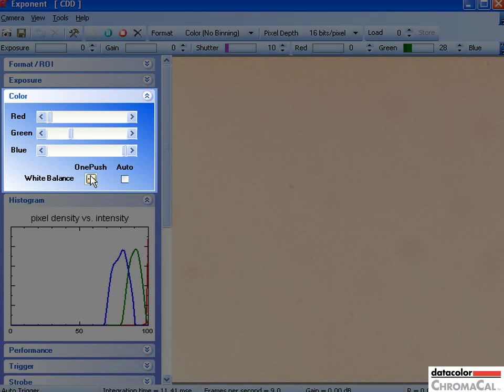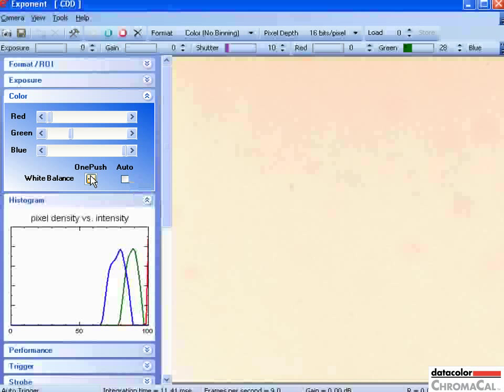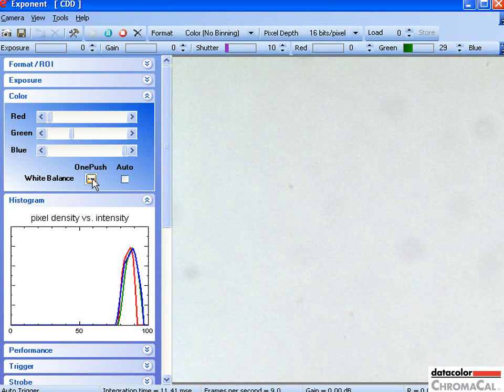Click on the white balance button. Here you do not check the auto button or the white balance will be changed for each picture and white balance will likely be inconsistent. Set this once and do not reset.